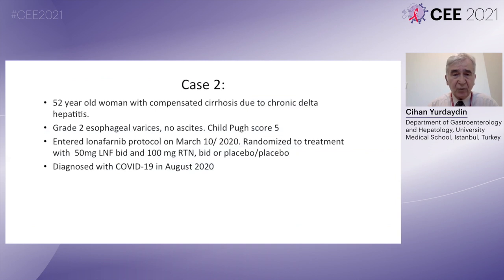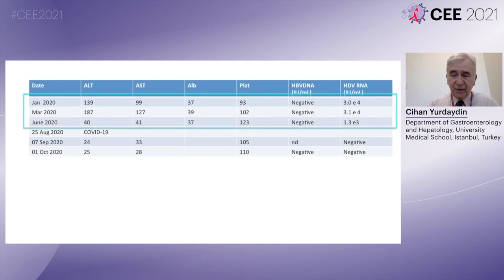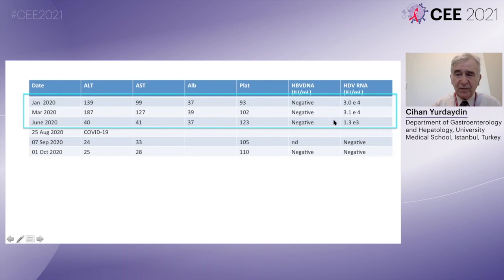The second case is a 50-year-old woman with compensated cirrhosis due to chronic delta hepatitis. She had grade 2 esophageal varices and ascites. She entered the lonafarnib phase 3 study in March 2020, randomized to treatment with 15 mg lonafarnib with ritonavir BID or placebo — a double-blind study, so we do not know which she received. She was diagnosed with COVID-19 in August 2020. Her ALT in January 2020 was 139, at screening day one it was 187, decreased to 40, with more than one log decrease in HDV RNA after three months. Diagnosed with COVID-19 in August/September, a few weeks later she was already HDV RNA negative — probably due to the treatment she was receiving — and she enjoyed totally normal liver enzymes, which continued.